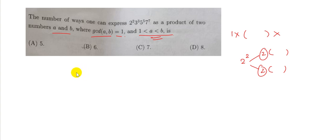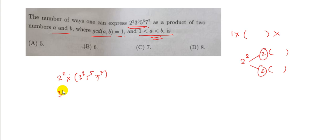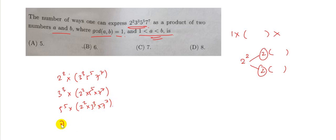That means we can choose any one of the 4 given prime powers to stand alone. So the four single-element choices are: 2² with (3³·5⁵·7⁷), then 3³ with (2²·5⁵·7⁷), then 5⁵ with (2²·3³·7⁷), and then 7⁷ with (2²·3³·5⁵). These are the four choices using one prime power against the other three.